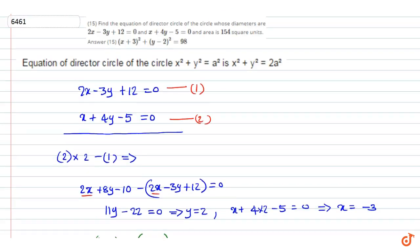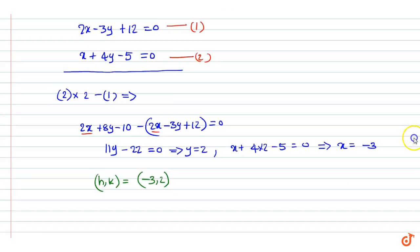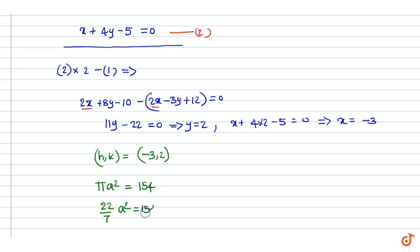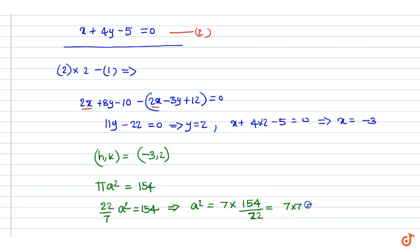It is given that the area of the circle is 154 square units. Let a be the radius of the circle. Then pi a squared equal to 154. Taking pi as 22 by 7, a squared equals 154 multiplied by 7 divided by 22, which equals 7 multiplied by 7, equal to 49.